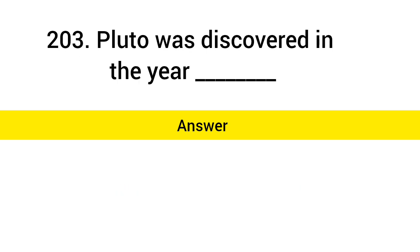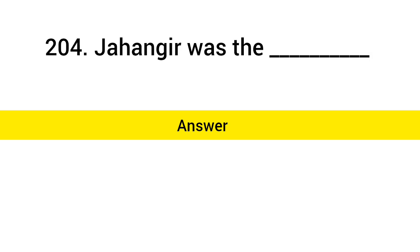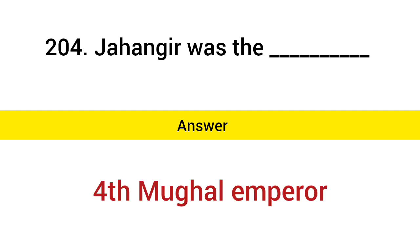Pluto was discovered in the year? Answer: 2006. Jahangir was the? Answer: Fourth Mughal Emperor.